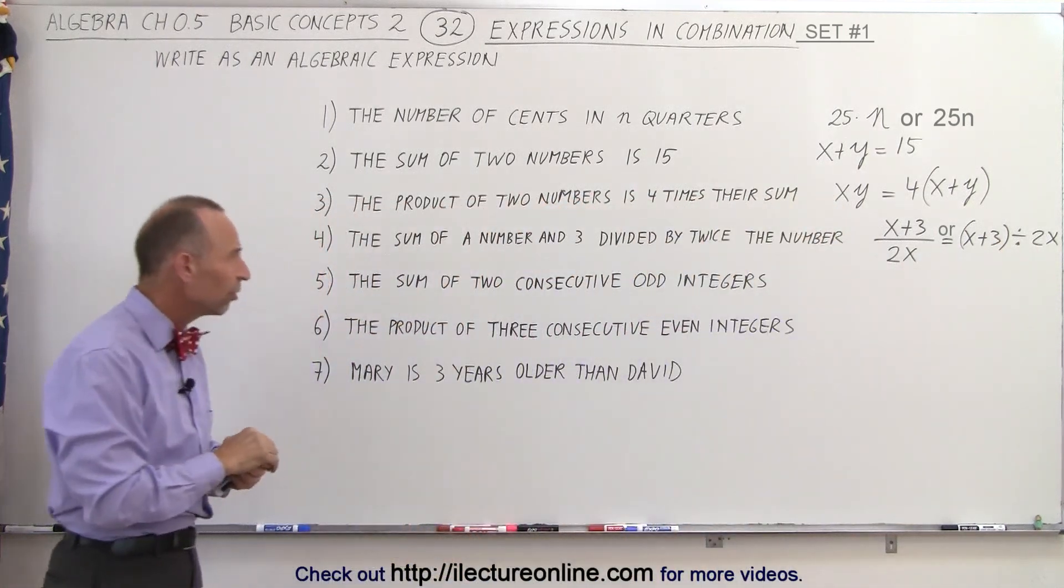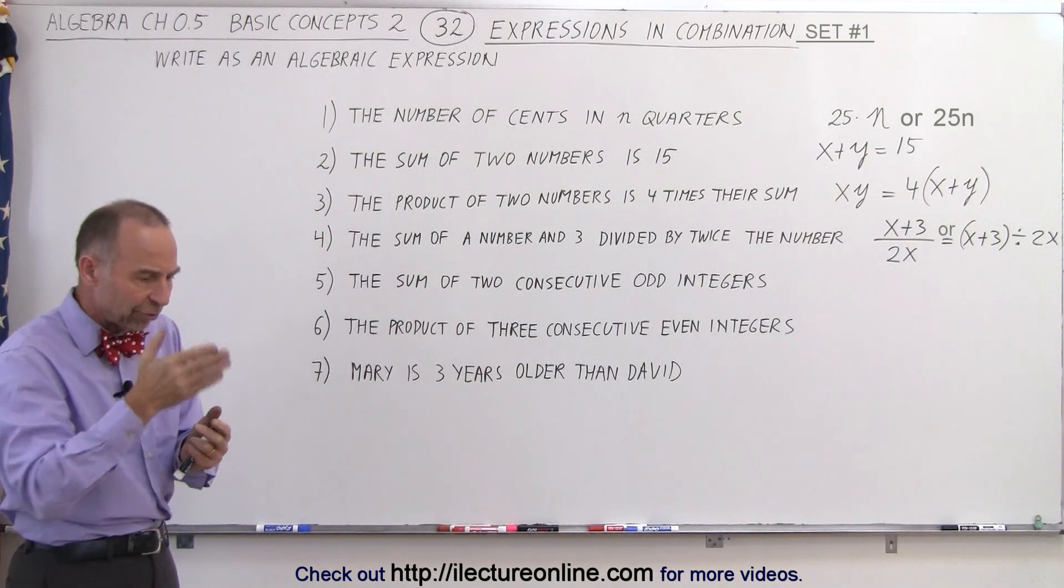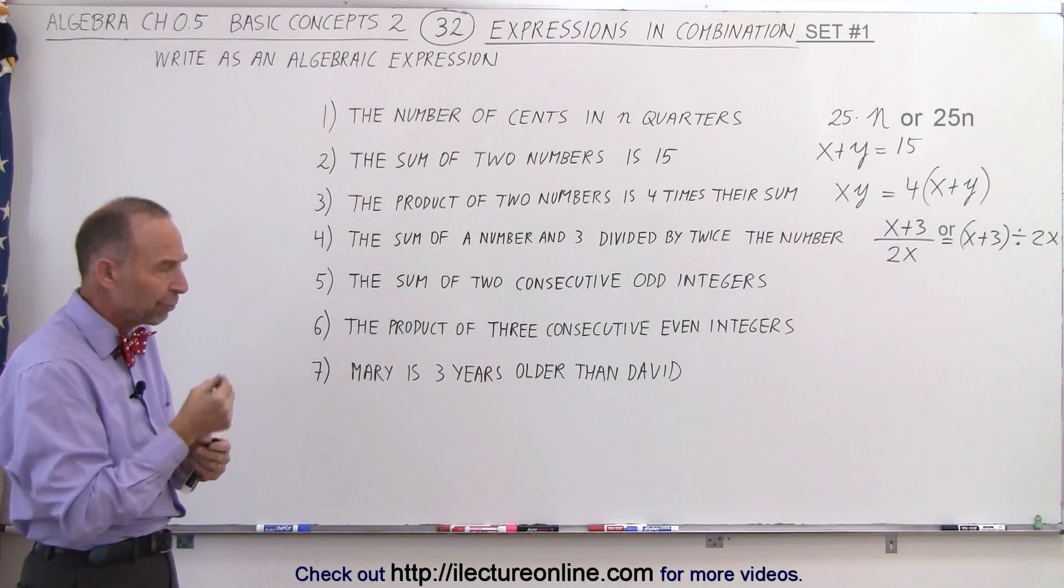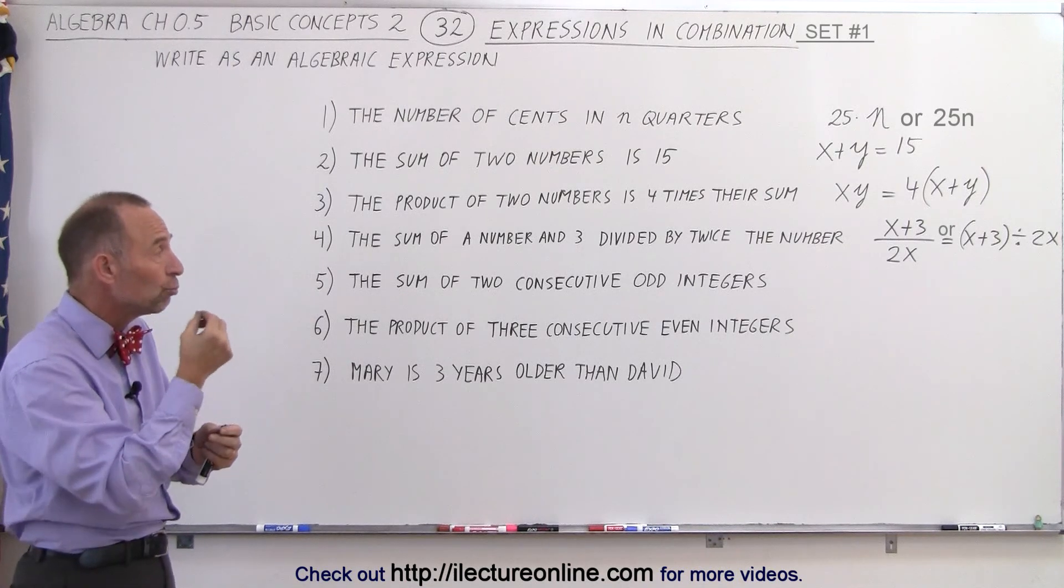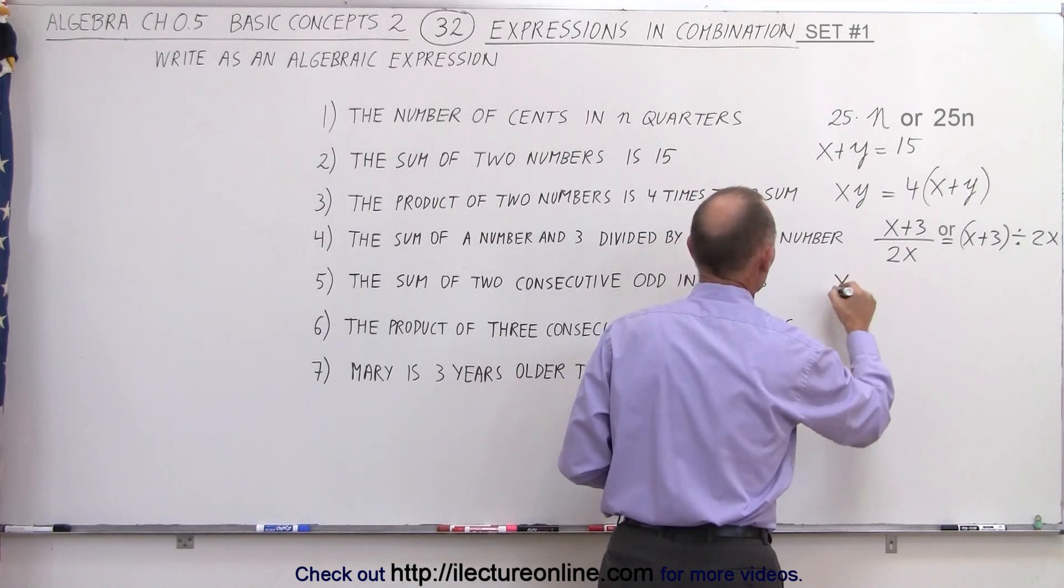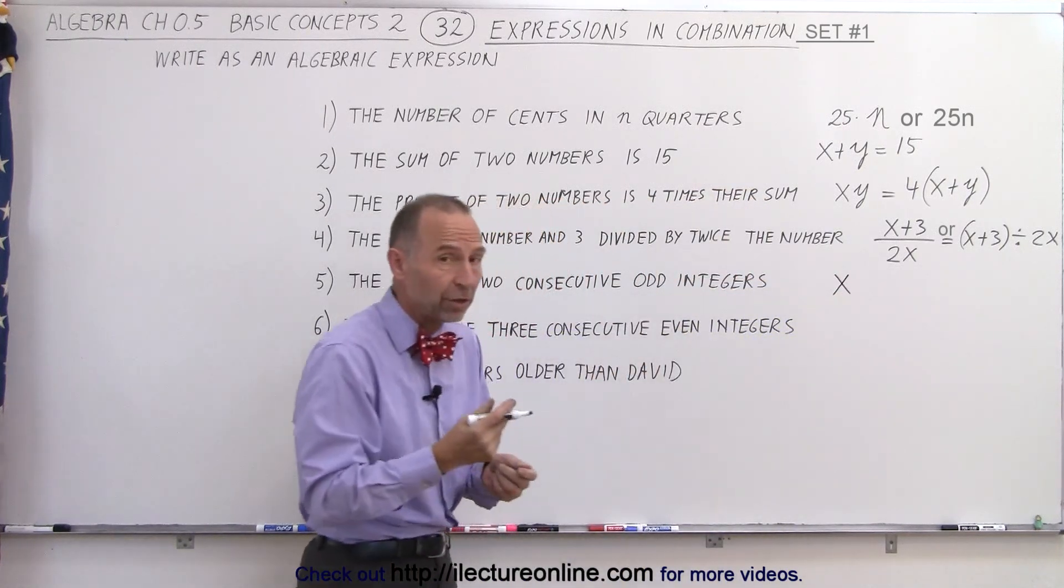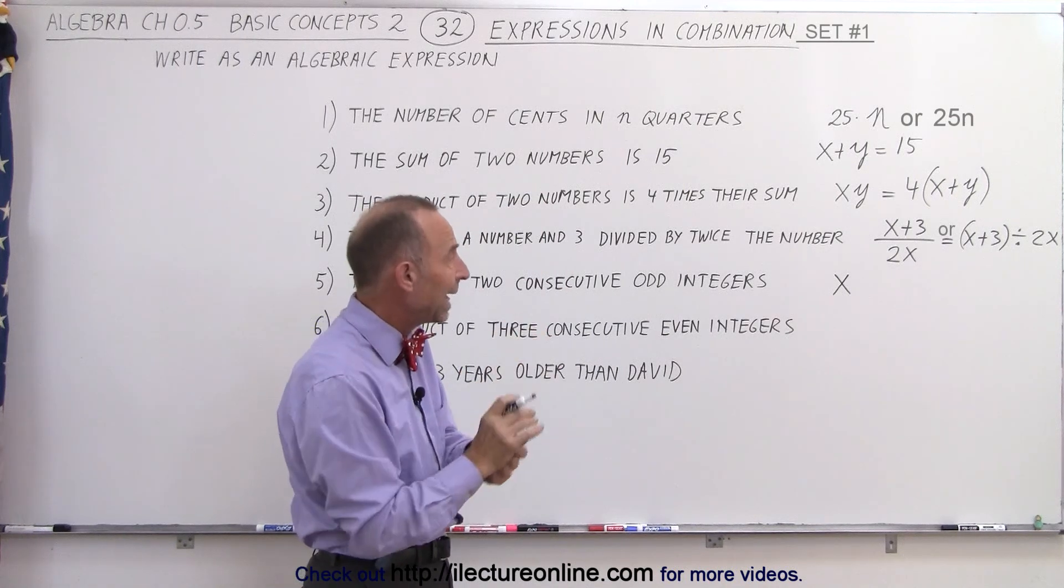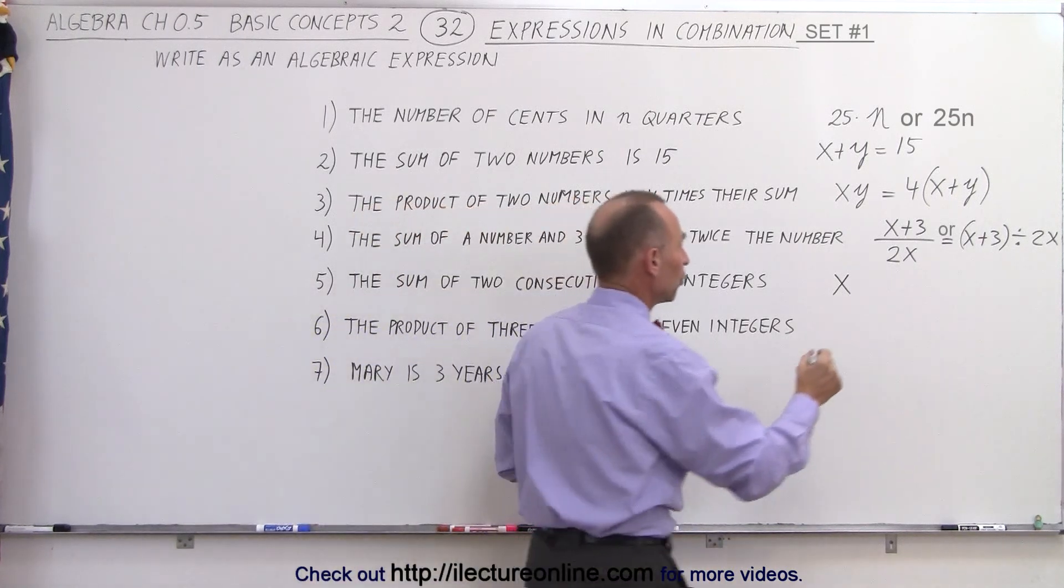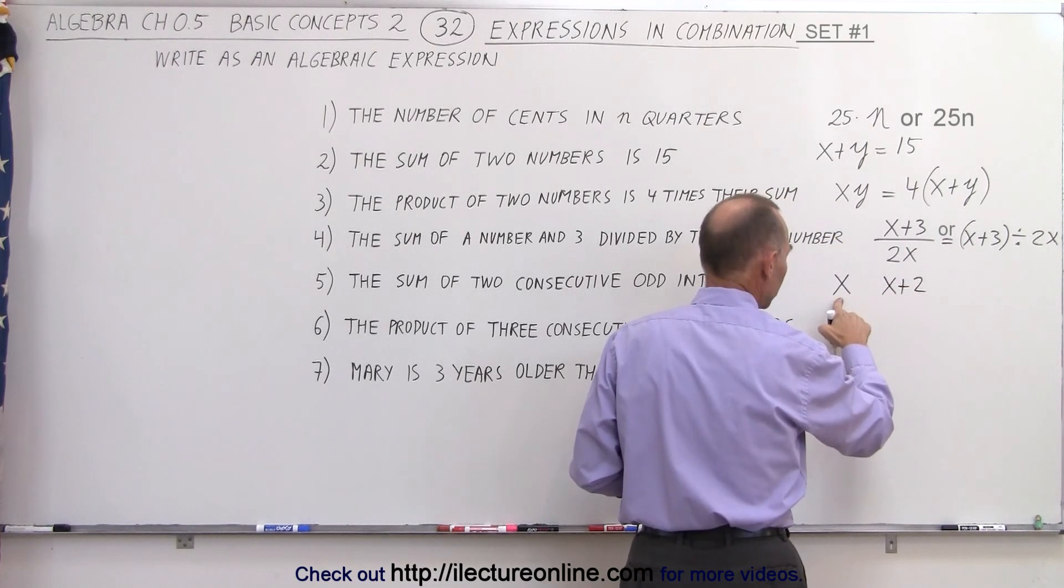How about the sum of two consecutive odd integers? Consecutive means one after the other. So if we let x represent the smallest of the two odd integers, so we have x being the smallest one. And the next one would be x plus two, because there's always two between any two odd integers. So the two would be x and x plus two. That's the first odd integer, the smaller of the two.